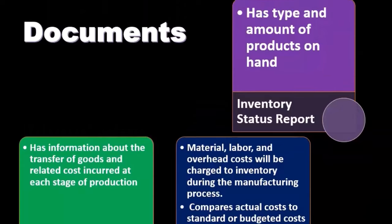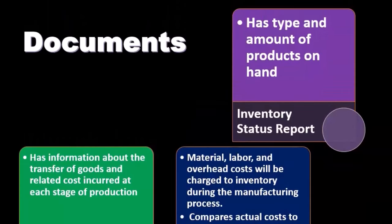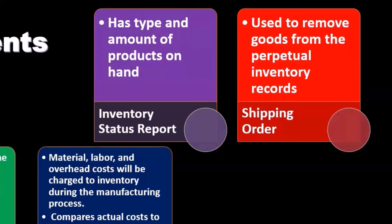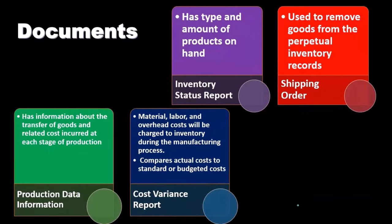The inventory status report includes the type and amount of products on hand. The shipping order is used to remove goods from the perpetual inventory records. When we think about the shipping order, these are orders going out — meaning we likely sold the goods, so they should no longer be on our books. This form triggers the transaction that removes the inventory from the business's books.